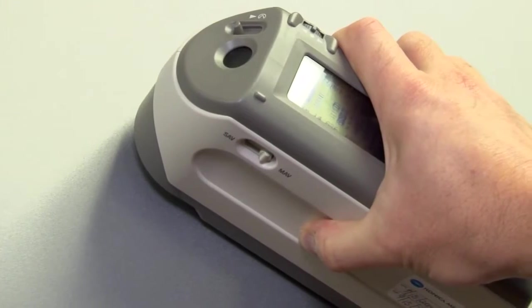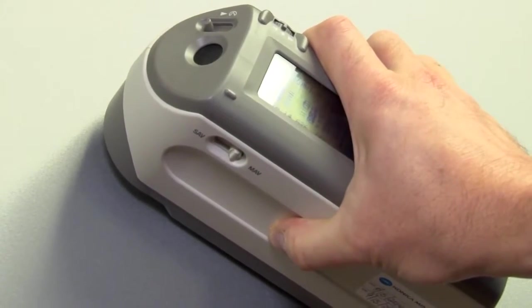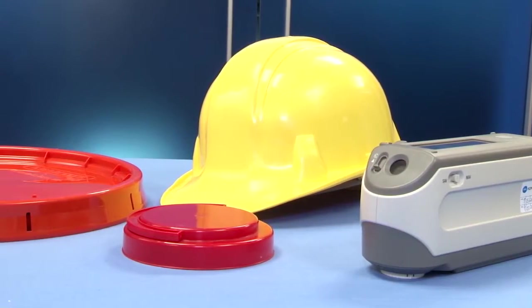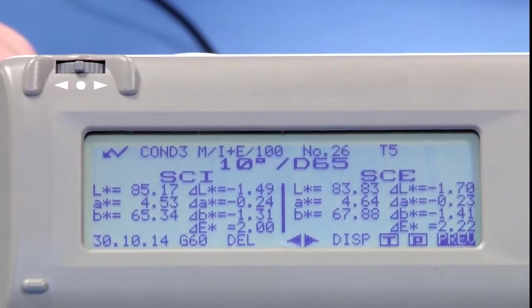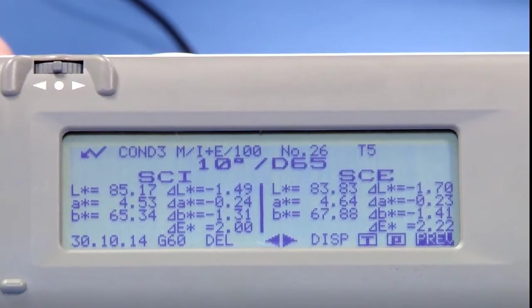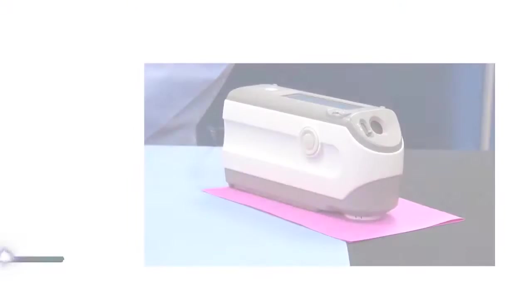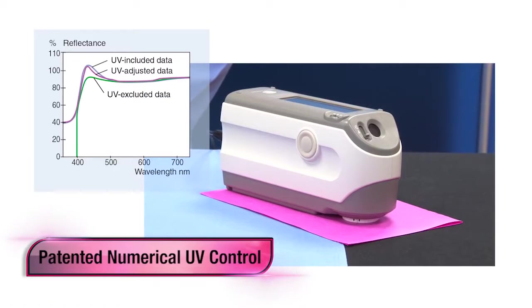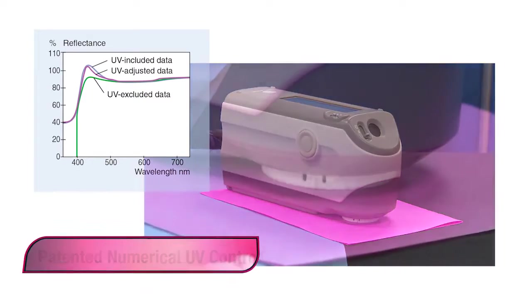Manufacturers and quality assurance professionals have embraced this technology for its easy operation, speed and accuracy. The CM-2600D is the world's first portable spectrophotometer to offer the patented numerical UV control.